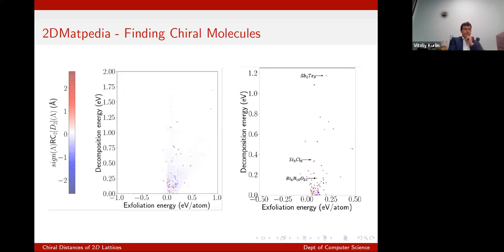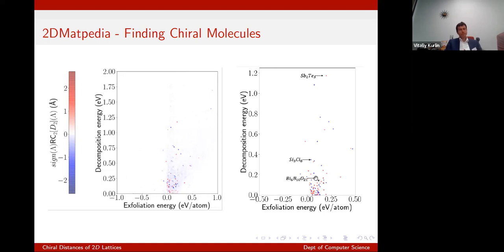To find plausible candidates, the database measures decomposition energy (high is good for stability) and exfoliation energy (roughly how much energy needed to peel a two-dimensional layer). We can overlay chiral distance values and find materials with high decomposition energy, low exfoliation energy, and strong asymmetry. This gives us another filter to find promising candidates.